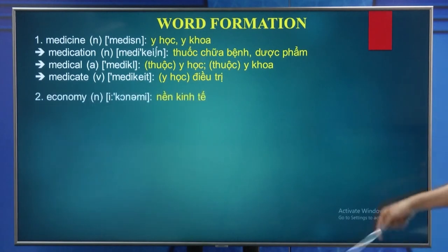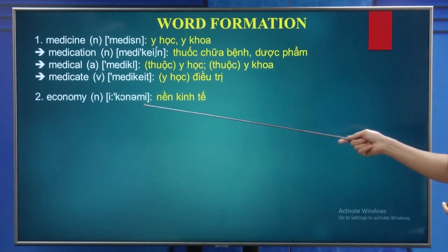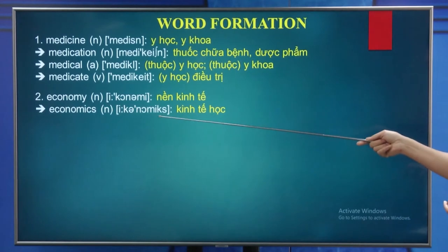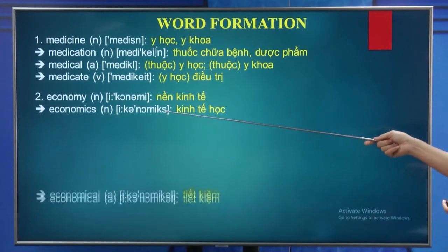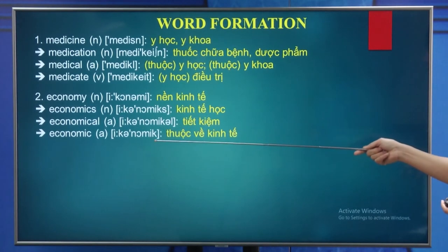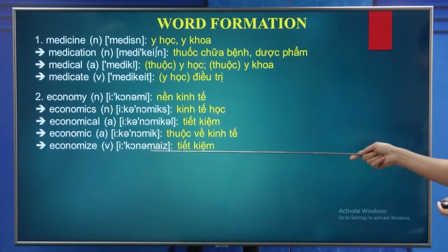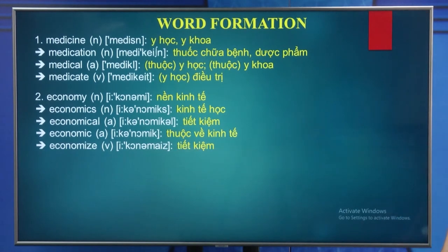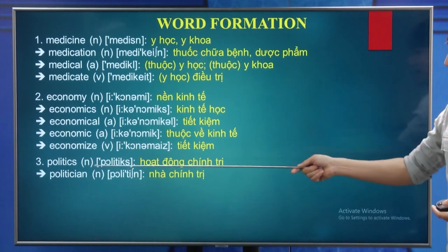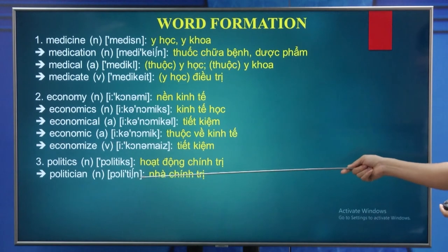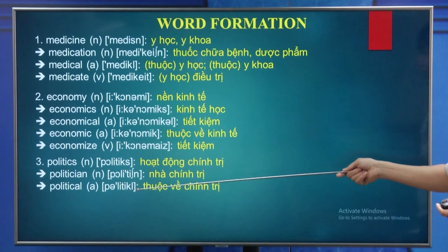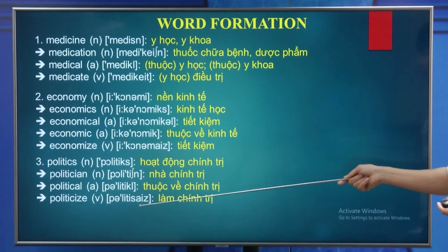Number 3 - Politics: the noun is politics, another noun is politician, the adjective is political, and the verb is politicize. Number 4 - Hesitate: the verb is hesitate, the noun is hesitation, and the adjective is hesitative. Number 5 - Equal: the adjective is equal, the noun is equality, and the verb is equalize.